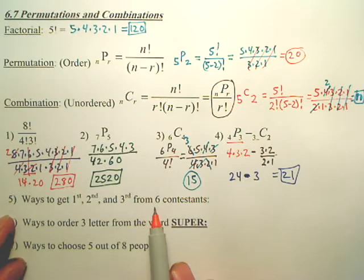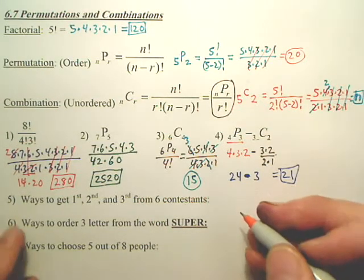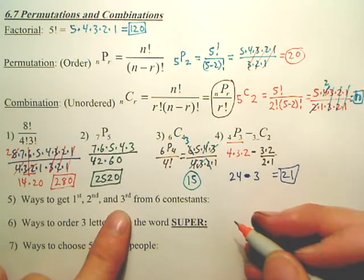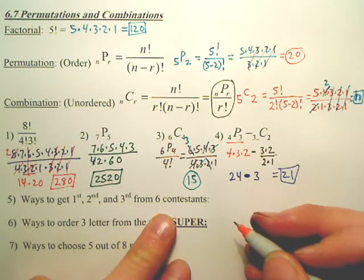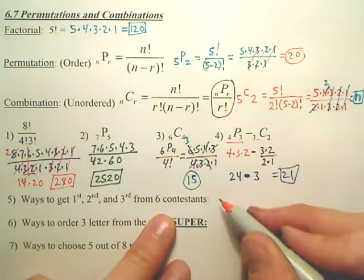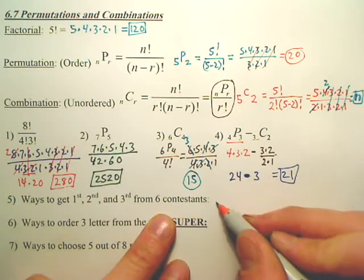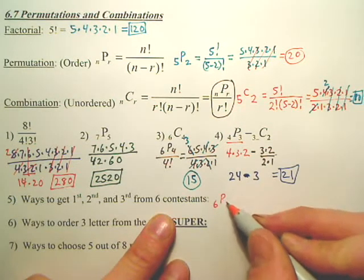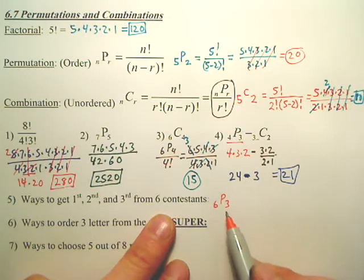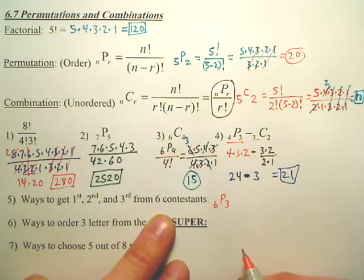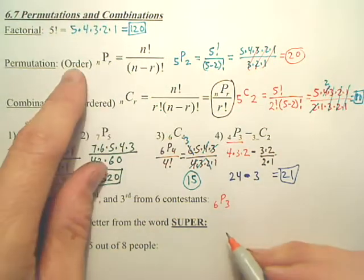Yes. If I want to find out how many ways can you get a first, second, and third place winner from the six people who are running, who are in the competition, do you understand? That is 6P3. Out of the six, I want three. Is order important? Yes.